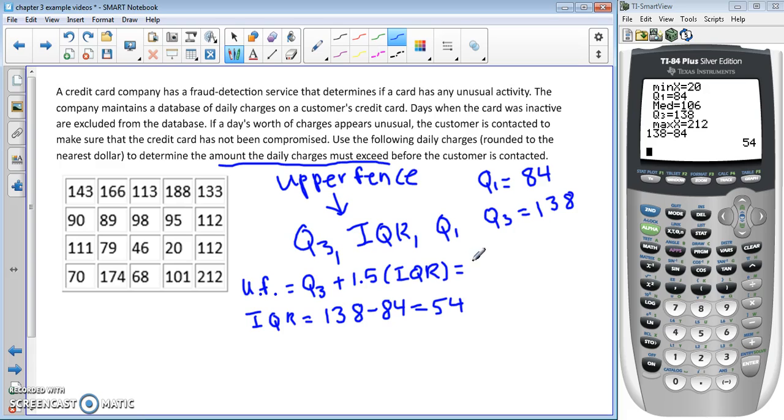Now we can calculate the upper fence: 138 plus 1.5 times 54.